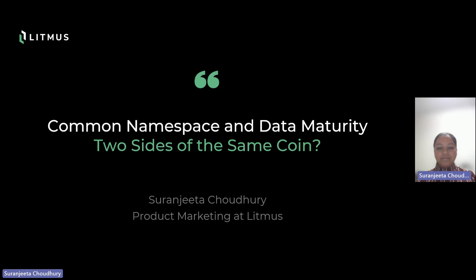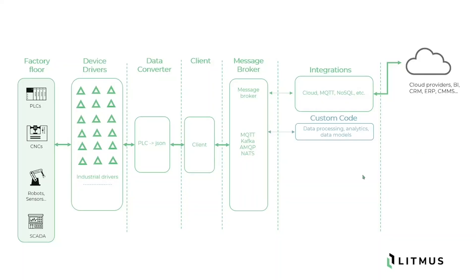Let's think through this for a minute. We spoke with hundreds of manufacturing plants, and this evolved as a typical architecture, give or take. There is a heterogeneous plant floor of PLCs, CNC machines, custom machines, some manual, some semi-automatic as well, different kinds of robots and sensors. Then there is a SCADA system that does some mission-critical supervisory control and data acquisition activities. Manufacturers buy OPC UA-based device drivers, or some additional ones as needed. They also use a data converter or switch client that can publish this data to a message broker, followed with the next league of integrations for a true digital transformation journey to begin.